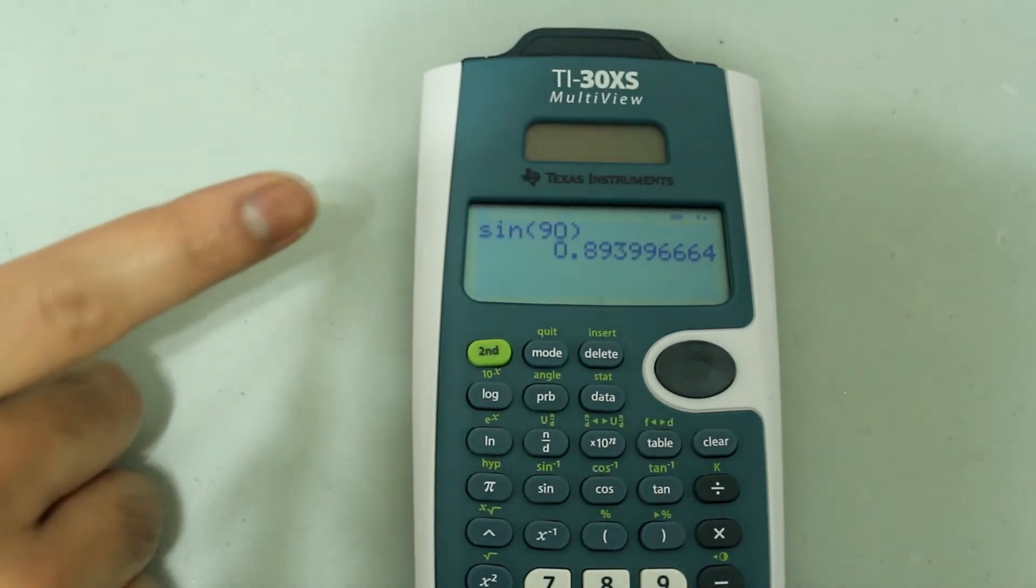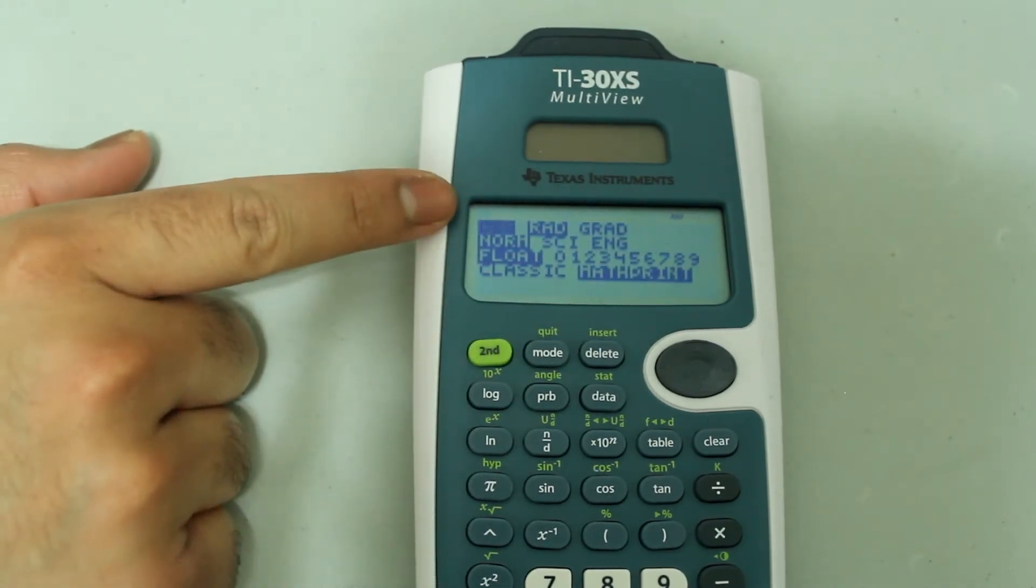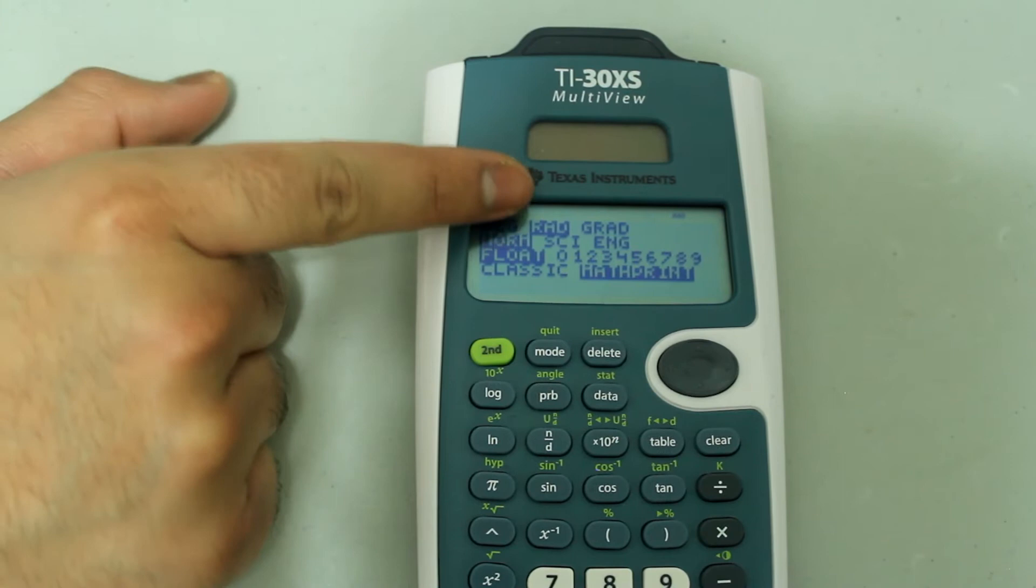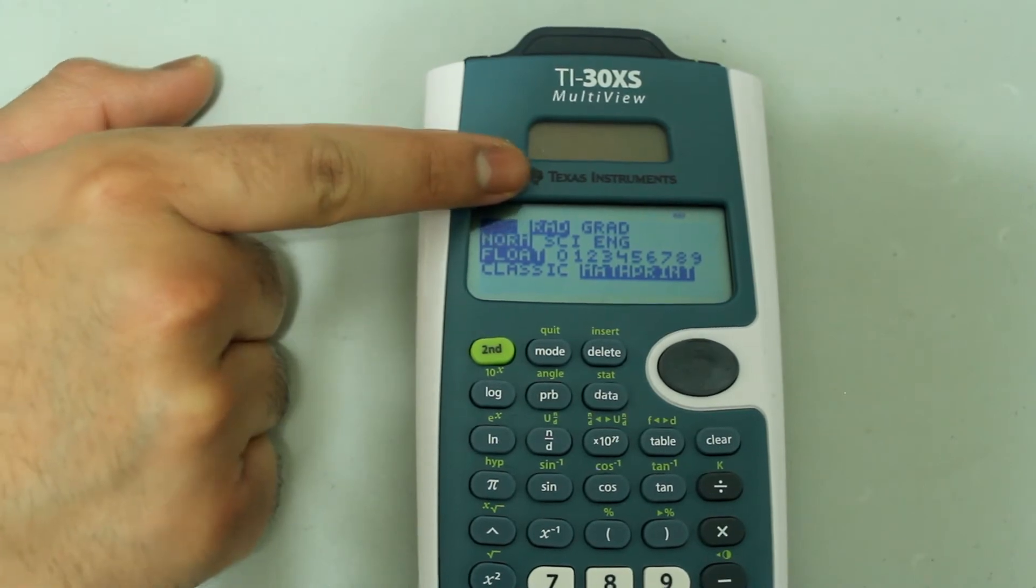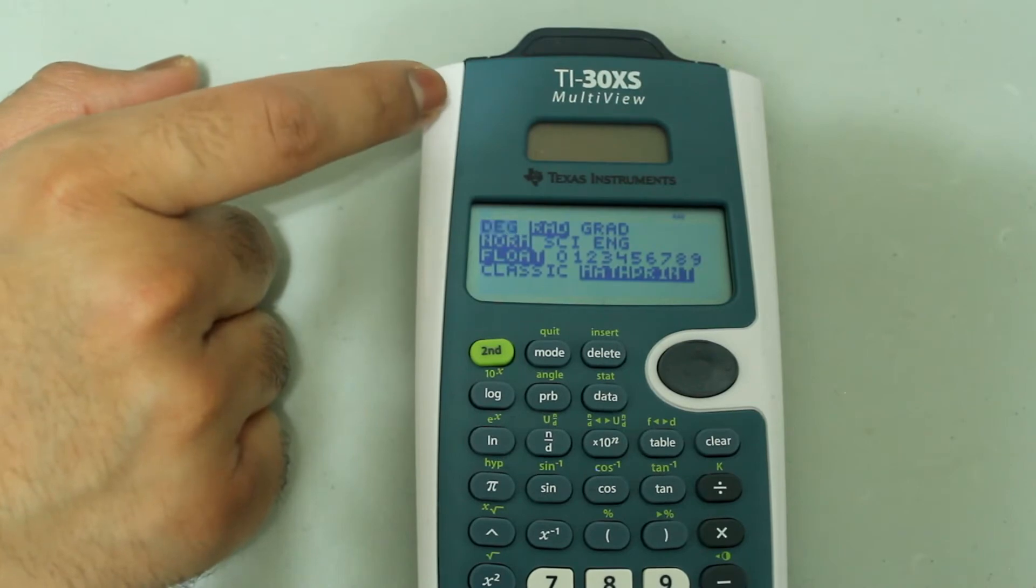To change this, I'm going to press the mode button and the mode screen comes up. And you'll notice that radian is highlighted in black. That means radian is selected.